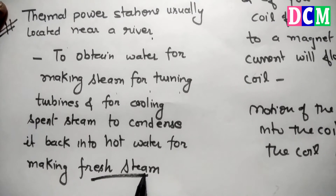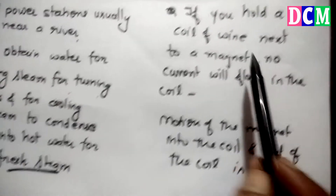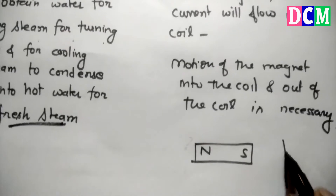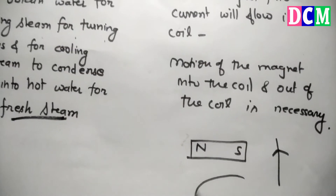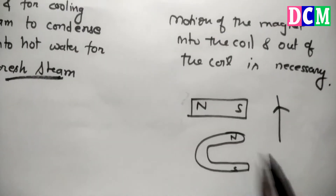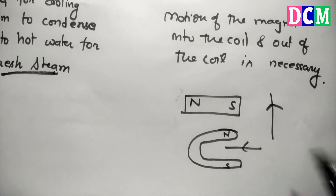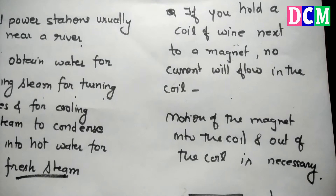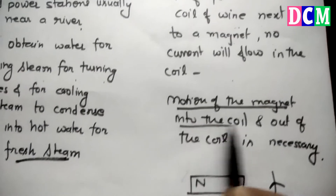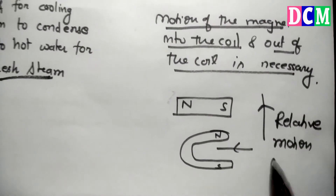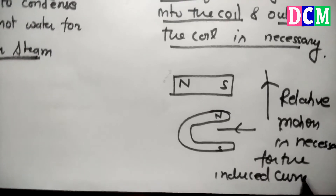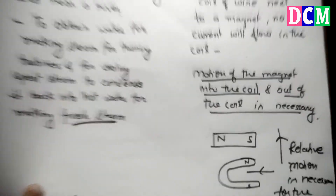That is why we build a thermal power station usually near a river. If you hold a coil of wire next to a magnet — for example, a bar magnet with north and south poles and a coil held next to it — no current will flow in the coil. Motion of the magnet into and out of the coil is necessary; relative motion is necessary for the production of induced current.